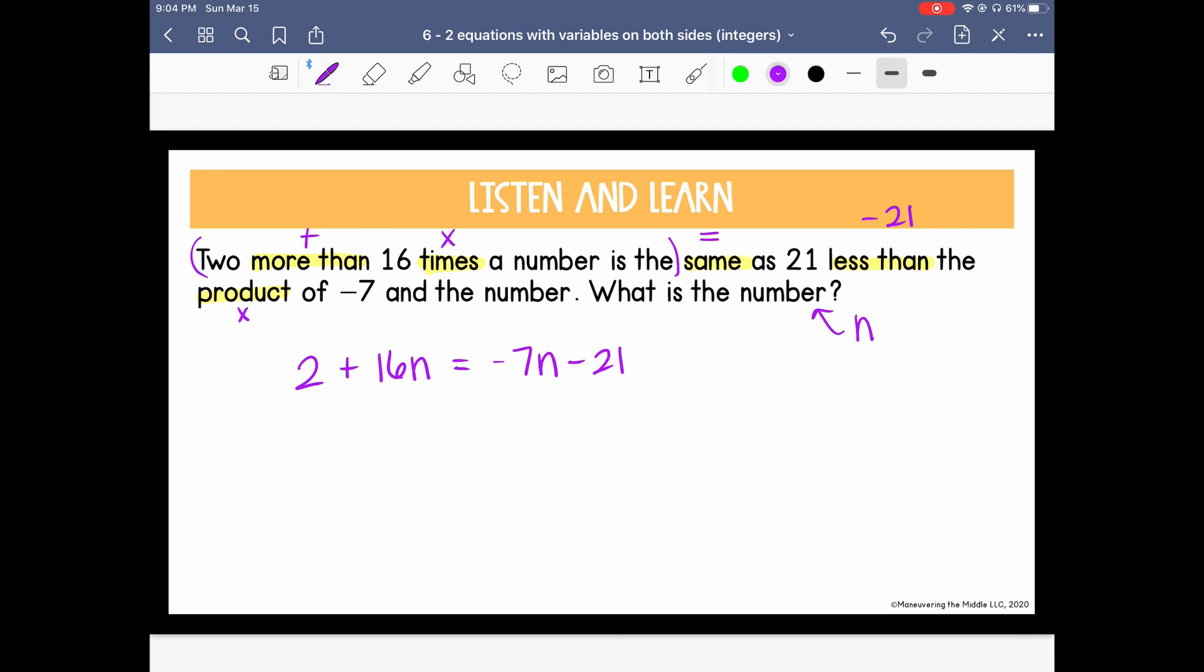So now we have our equation to solve. I'm going to collect the variables first on the left. So I will add 7n to both sides. So I have 2 plus 23n equals negative 21. So let's remove the 2,